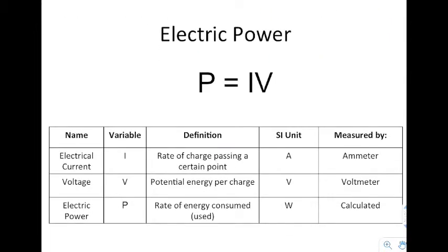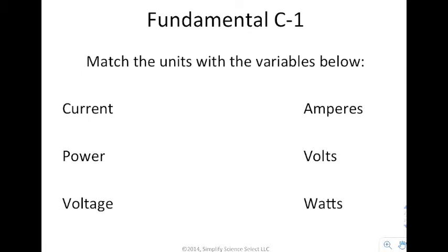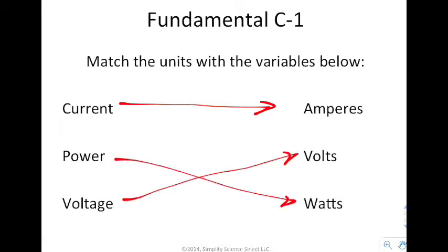Electric power is P equals IV, where P stands for power. Now, we've talked about power earlier this year when we talked about energy. So you've seen power. Power is the rate at which energy is consumed, and it's measured in the watts. So that is not new, and you have current and voltage which we talked about in the previous formula. If you multiply current and voltage together, you actually get power. So if we look at this, it says match the units with the variables below. We say current is measured with amps, voltage is measured in volts, and power is measured in watts.